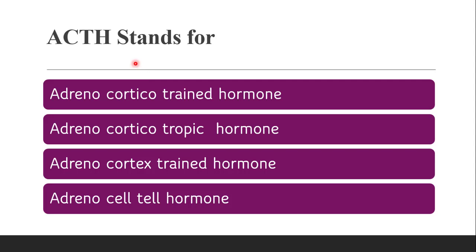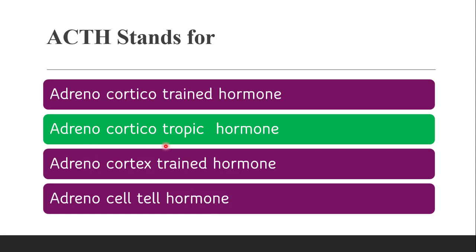Next question: ACTH stands for — whether it is adrenocortico-trained hormone, adrenocorticotropic hormone, or adrenocortical hormone. The correct answer is adrenocorticotropic hormone. A stands for adreno, C stands for cortico, T stands for tropic, and H stands for hormone.